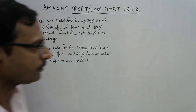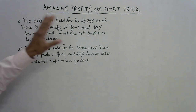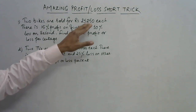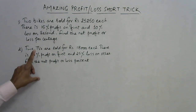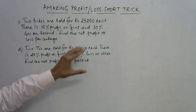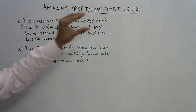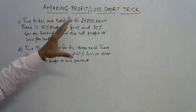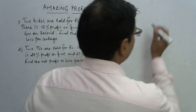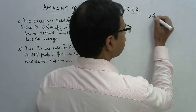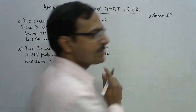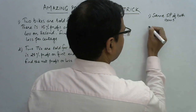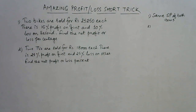Let's see the question first. There are two items which have the same selling price. In this case we have two bikes which are sold for rupees 25,250 each, and in the second question we have two televisions which are sold for rupees 18,000 each. So the first condition of the question is: there are two items and they are sold for the same price — same SP of both items.